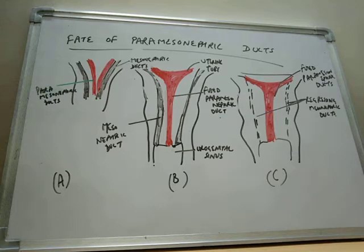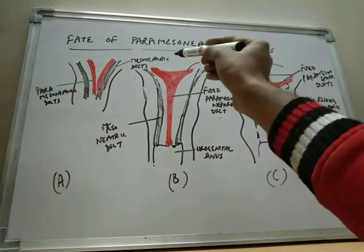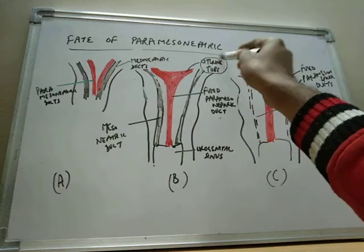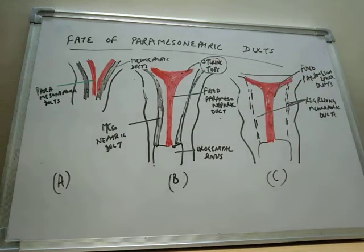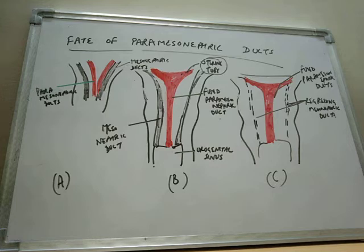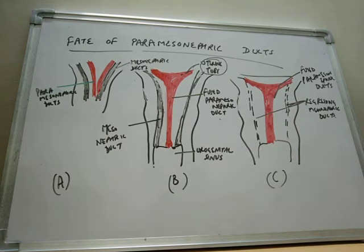The unfused parts of the paramesonephric duct form the uterine tube. The original points of invagination of the ducts into the coelomic epithelium remain as abdominal openings of the tubes, and fimbriae are formed.